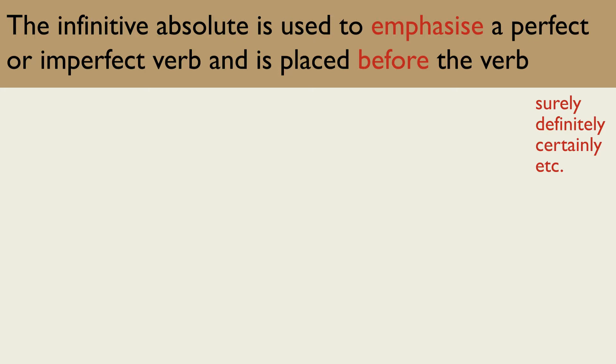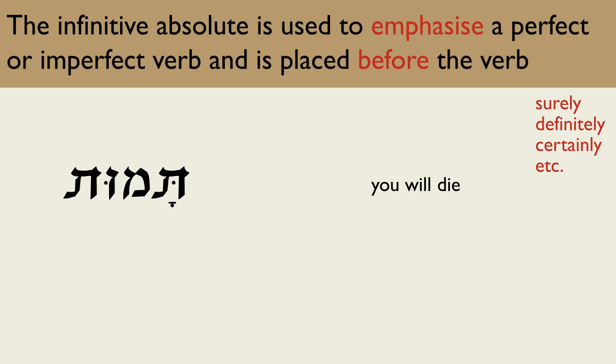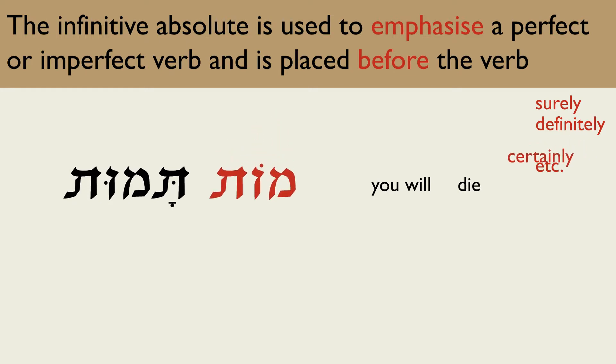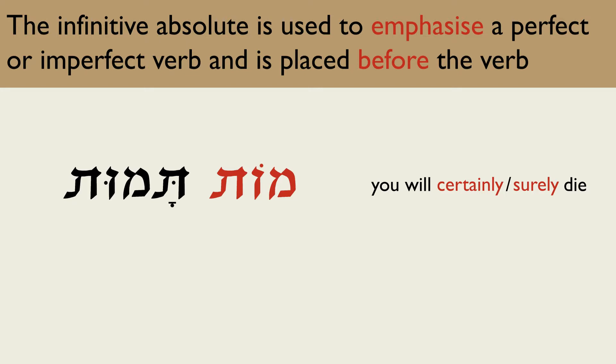The imperfect verb means 'you will die.' When the infinitive absolute is placed before it, the translation changes to 'you will certainly die' or 'you will surely die.'